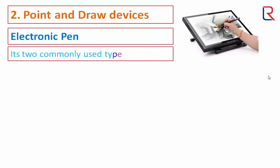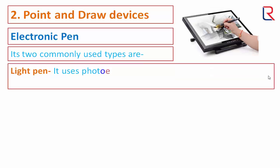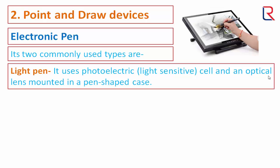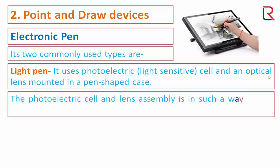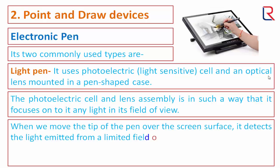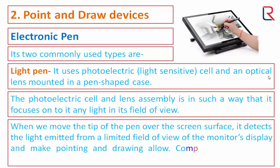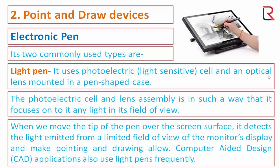Electronic pen — light pen: a light pen uses a photoelectric cell and an optical lens mounted in a pen-shaped case. The photoelectric cell and lens assembly is arranged so that it focuses on any light in its field of view. When the tip of the pen is moved over the screen surface, it detects the light emitted from a limited field of view of the monitor's display, enabling pointing and drawing. Computer-aided design applications also use light pens frequently.